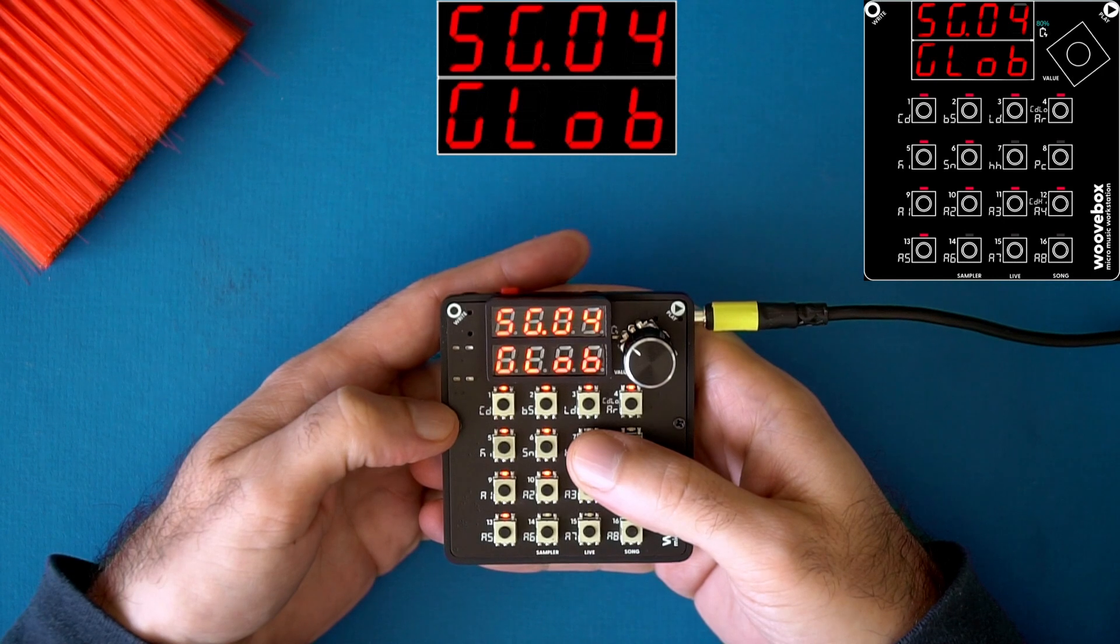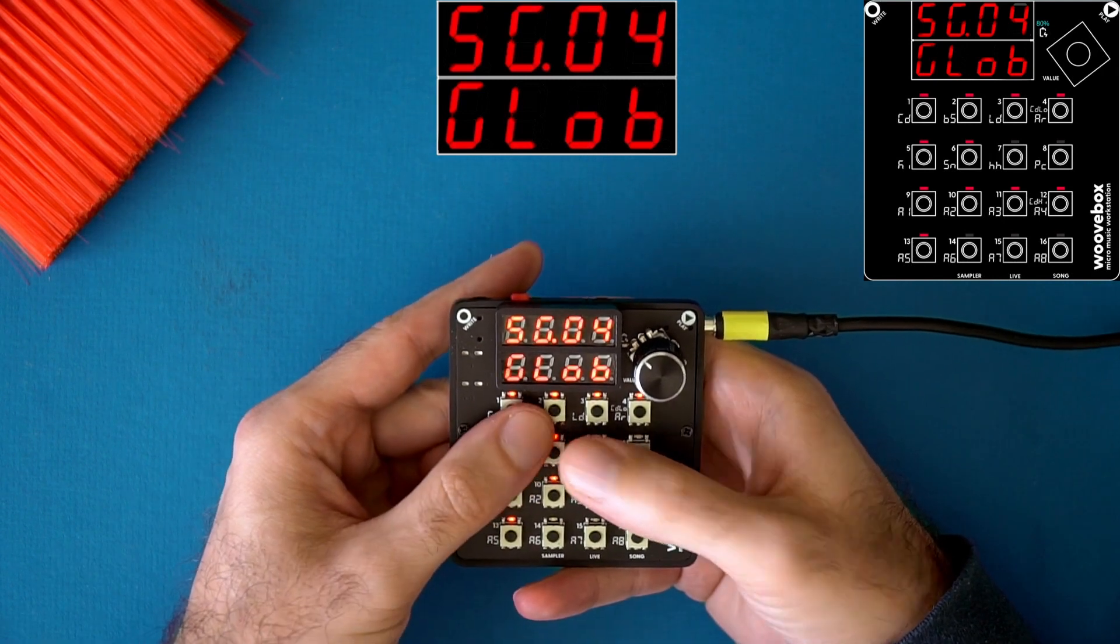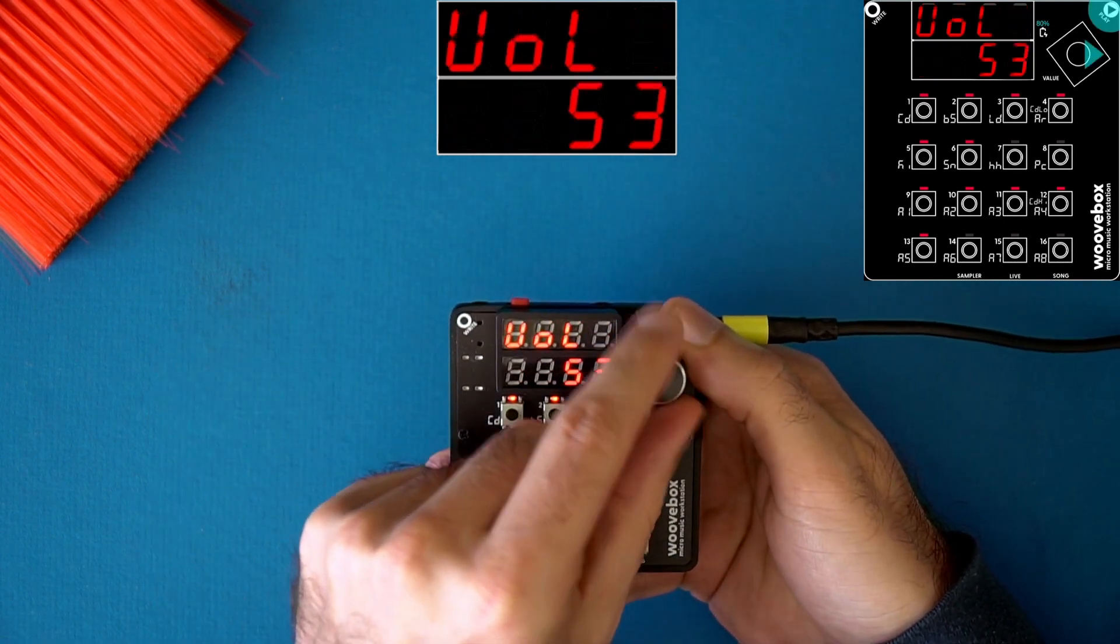Tip number one, how to change the master volume. You change the master volume by holding play and turning the encoder.